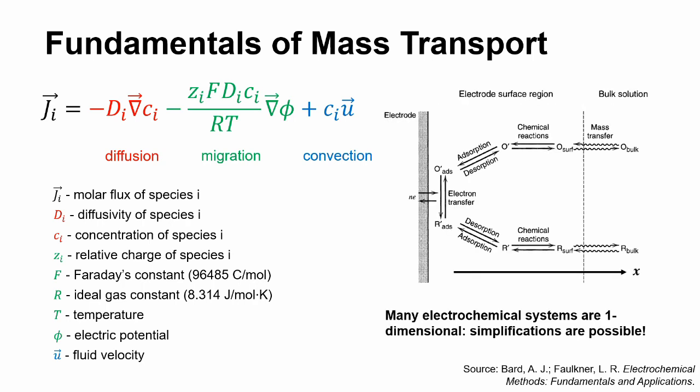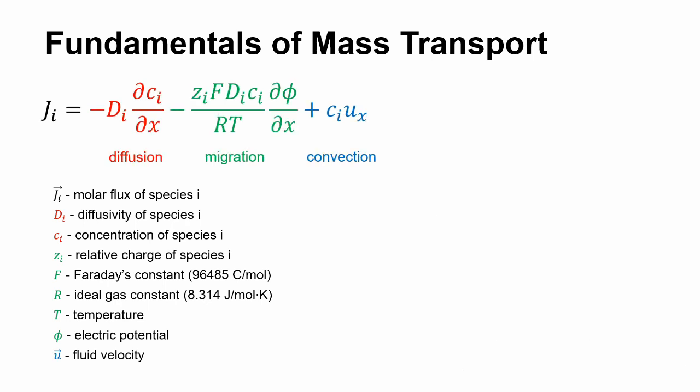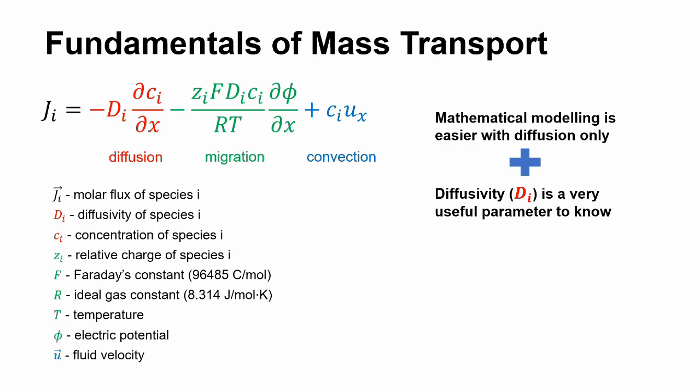In many electrochemical systems, mass transport occurs overwhelmingly in one direction, so the equation can be simplified. Furthermore, because modeling mass transport of electrochemically active species is easier if it is carried out by diffusion only, and to calculate the diffusivity of those species, it is important to eliminate migration and convection experimentally.